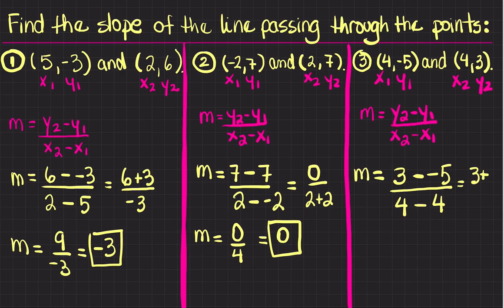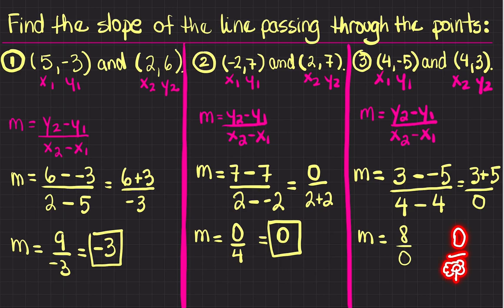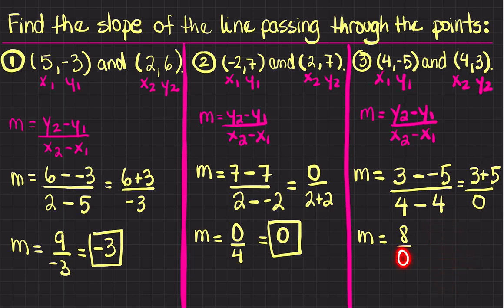So this is 3 plus 5 divided by 4 minus 4, which is 0. So I have 8 divided by 0. The thing is, you can have 0 divided by any number and that will always be 0, but what cannot happen is any number divided by 0. If you do that on your calculator, you will get an error. So if you have 0 in the denominator, that cannot happen, and you say that your slope is undefined. That will be your answer — you don't have a number for the slope.